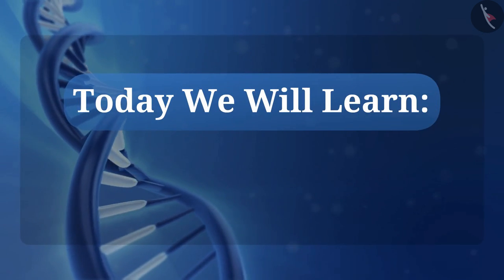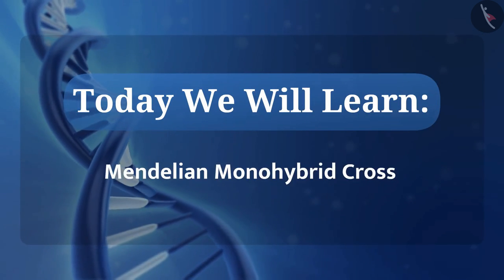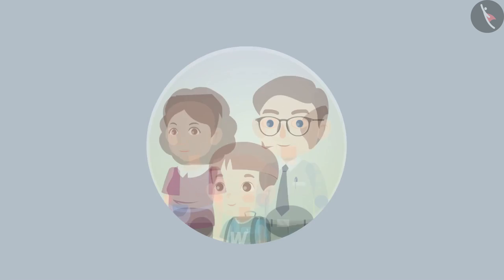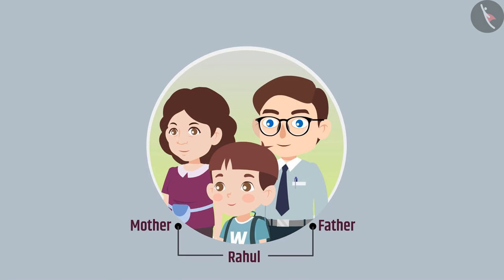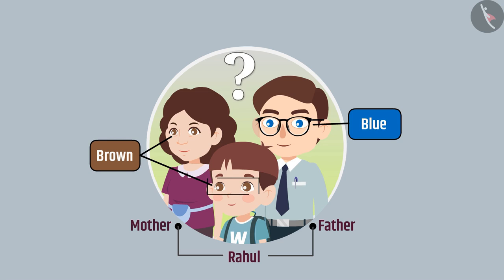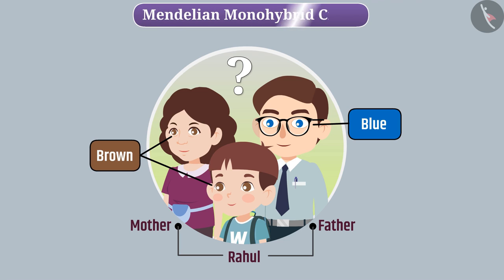Today, we will learn Mendelian Mono-Hybrid Cross. This is Rahul's family. Rahul and Rahul's mother have brown eyes, while his father has blue eyes. Can you tell me why Rahul's eye color is not blue? We get the answer for this question with the help of Mendelian Mono-Hybrid Cross. Let's understand it.